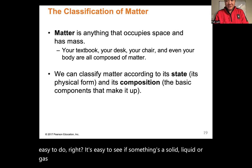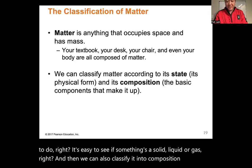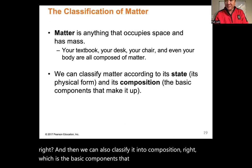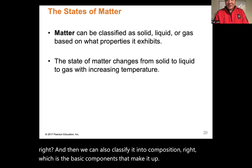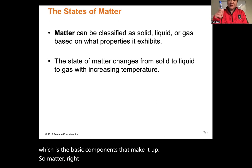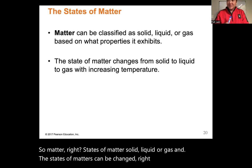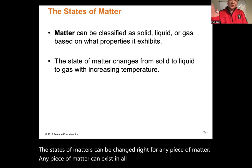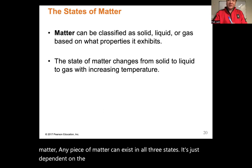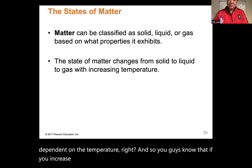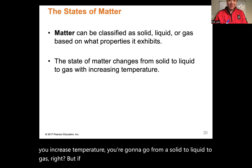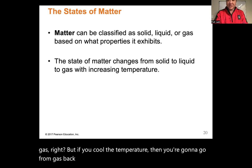We can also classify matter by its composition — the basic components that make it up. The states of matter can be changed: any piece of matter can exist in all three states depending on temperature. If you increase temperature, you go from solid to liquid to gas; if you cool it down, you go from gas back to liquid back to solid.